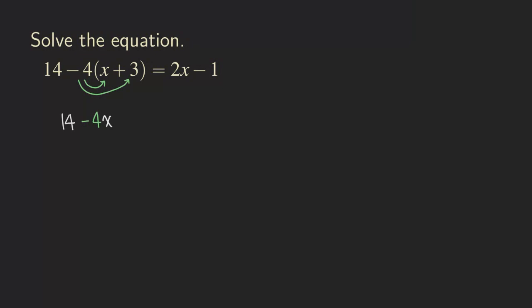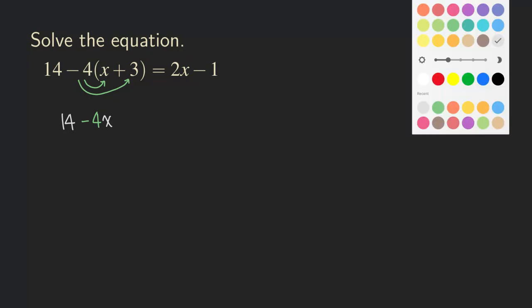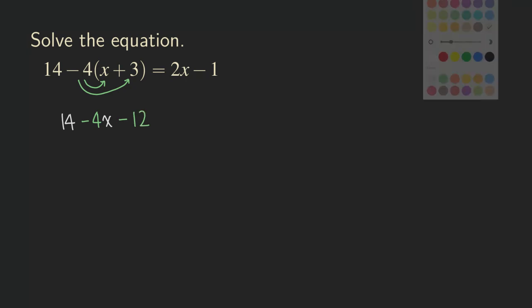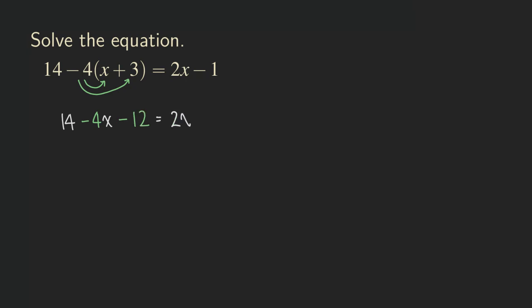So that's the first term. And then the second term that we are getting when we multiply the negative 4 with the positive 3 is that we are going to get negative 12. And then that's equal to 2x minus 1.